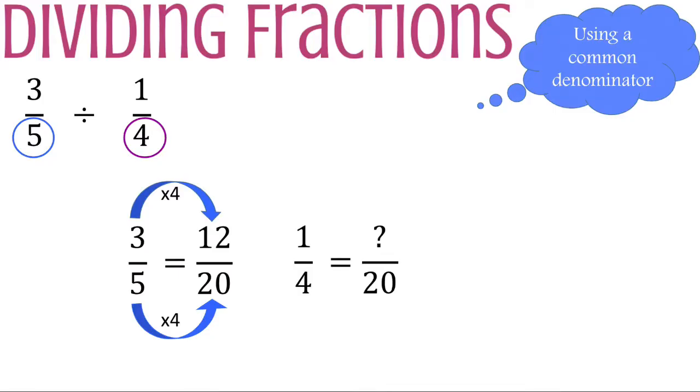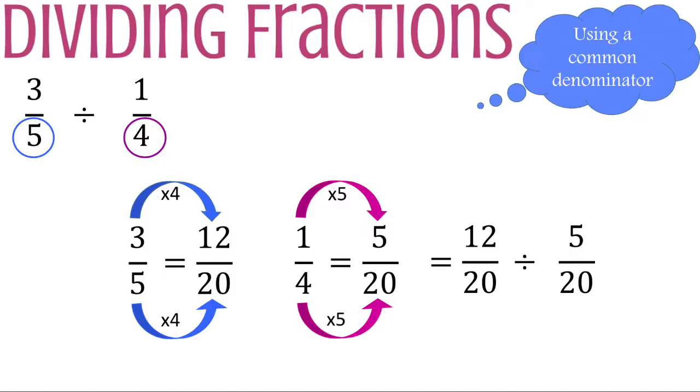I will do the same steps for one-fourth but in this case I'm multiplying by five. Same with the numerator giving me five. The equivalent fractions now are twelve-twentieths and five-twentieths with a common denominator of twenty.